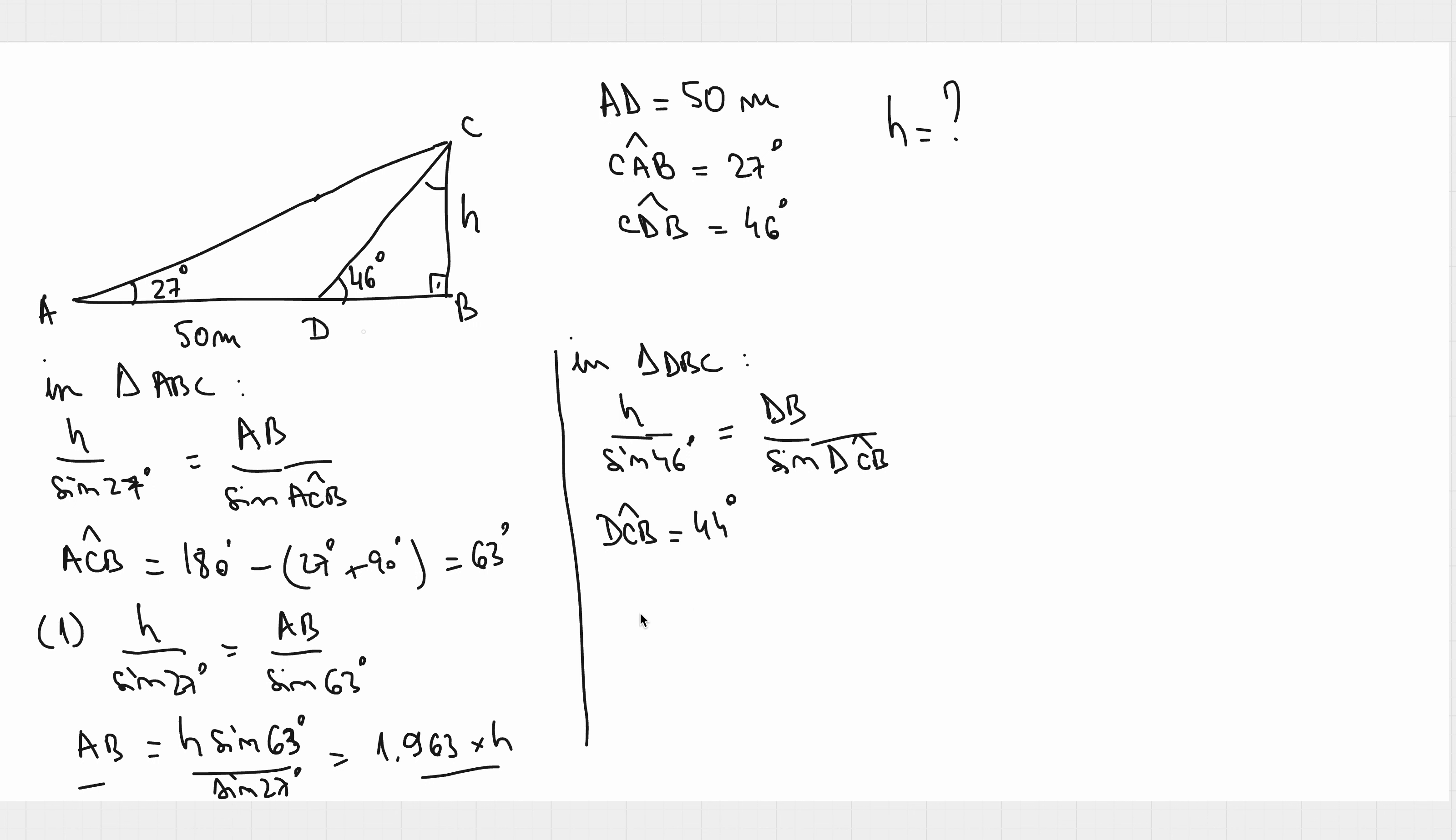And our second relation will be H over sine of 46 degrees is DB. DB, this part, is AB minus AD, which is 50, so we can replace that. AB minus 50 over sine of 44 degrees.